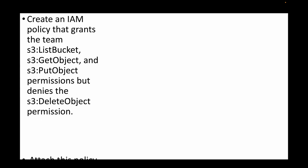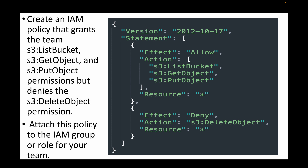For this, we will create an IAM policy. This policy will grant — you can see Effect is Allow — so we are allowing the users to whom we attach this policy: ListBucket access, GetObject access, and PutObject access. Then we need to block delete permission, so we will add one more Effect which is Deny, denying the DeleteObject action. We just need to attach this policy to your IAM group or role for your team and they will get the necessary permissions.